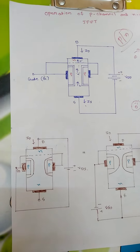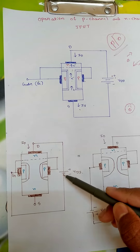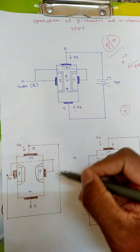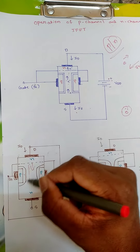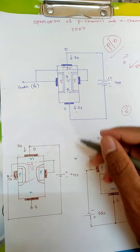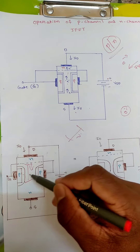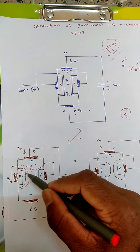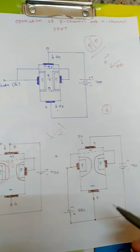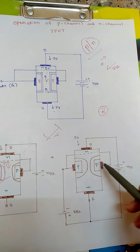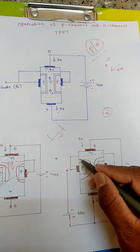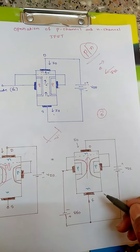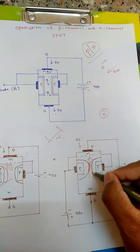What happens if we apply some gate voltage? The gate voltage is connected to the drain and source voltage. The depletion region width will increase. Due to the drain voltage, current flows and there is a voltage drop across the N-type material, which has resistance. This causes the P region to extend further. Since the P region is highly doped and the N region is lightly doped, the depletion region penetrates more into the N-type region, leaving only a small channel area.